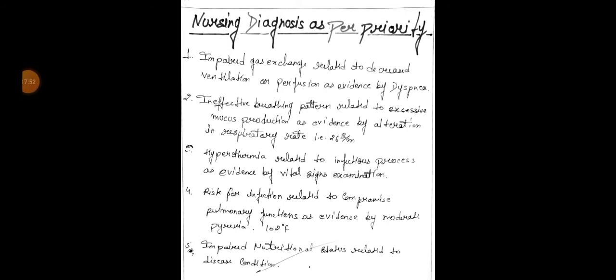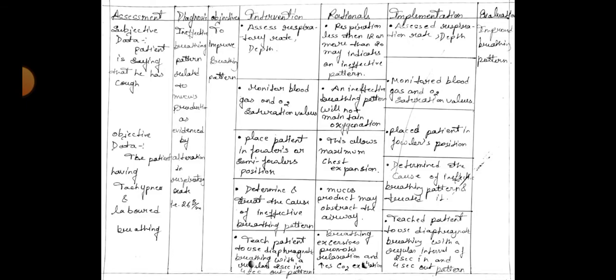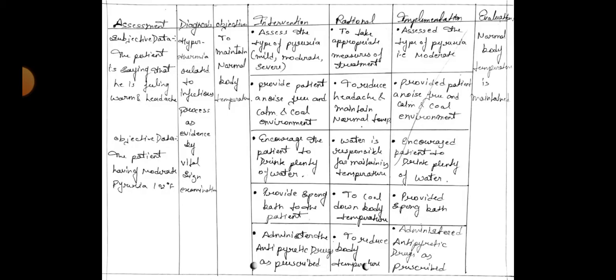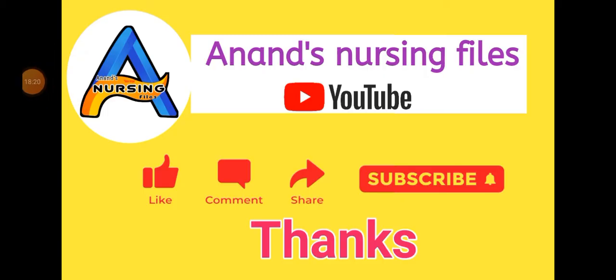So friends, first see nursing diagnoses as priority-based: care plan number one, care plan two, care plan three, care plan four, and care plan five. Friends, this was our topic — nursing care plan for bronchitis disease. How did you like it? Please comment and share this video with your friends, and subscribe to my YouTube channel. Please subscribe and press the bell icon also. Thank you.